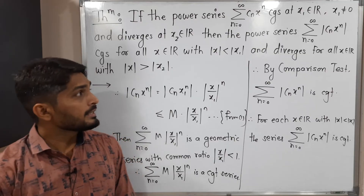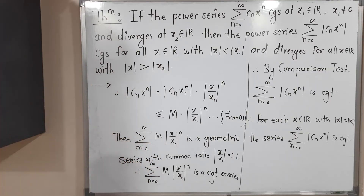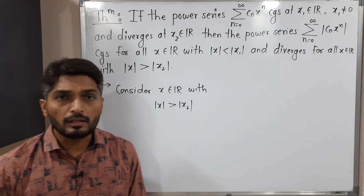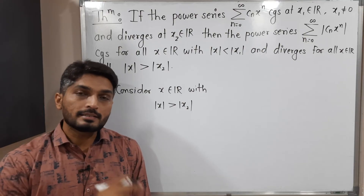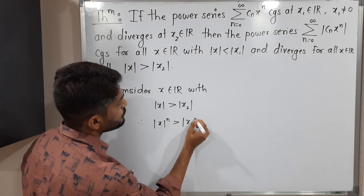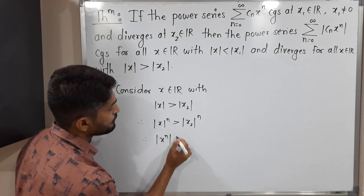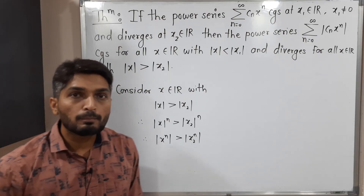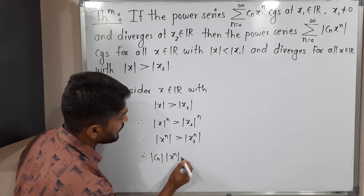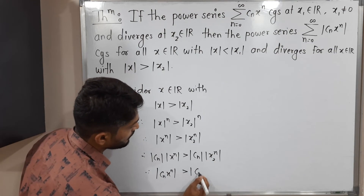In the second part, we have x with mod x greater than mod x2, and we have to prove that the series is divergent for that x. Taking the nth power of both sides — both are non-negative since we applied mod — we get mod x^n is greater than mod x2^n. Multiplying both sides by mod cn, we get mod cn·x^n is greater than mod cn·x2^n, by properties of mod.